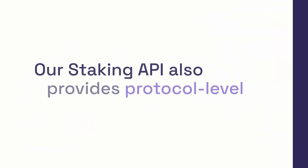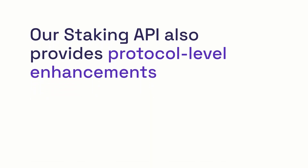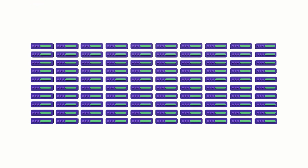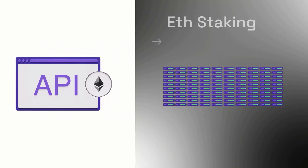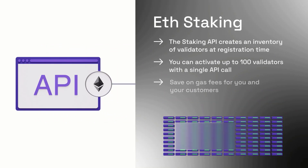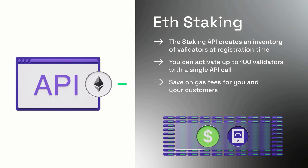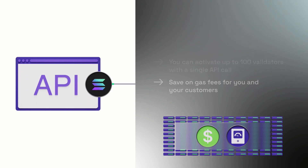The Staking API also provides protocol-level enhancements. For Ethereum, you can activate 100 validators with just one Staking API call. You receive one unsigned transaction for all 100 ETH validators. Simply sign this transaction to fund all 100, saving massive effort and gas costs in the process.